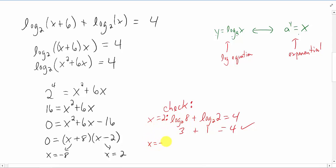But if we check our x equals negative 8 result, we are going to get log base 2 of negative 2 and log base 2 of negative 8, somehow adding up to 4. The problem is you can't actually plug negative numbers into logarithms at all. So this solution does not work. We are going to cross that one out and the only solution we come up with for this equation is x equals 2.